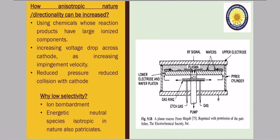Third, we can reduce the pressure at the cathode. Whenever we reduce the pressure, it minimizes collisions at the cathode, thus preserving the directionality of the ionized species and enhancing the anisotropic nature. Now, why is selectivity low? It is because of the ion bombardment. Ion bombardment means the layer we want to remove should only be removed, but if bombardment is happening, another layer above or below is also removed — that is poor selectivity.